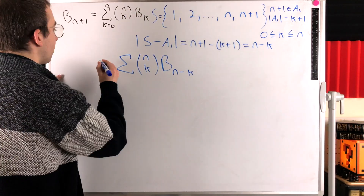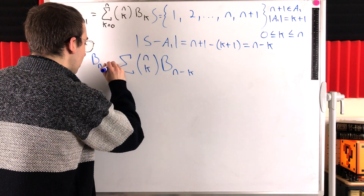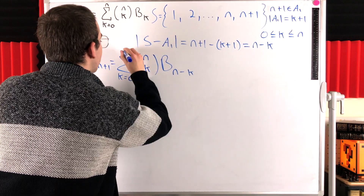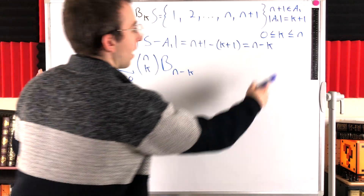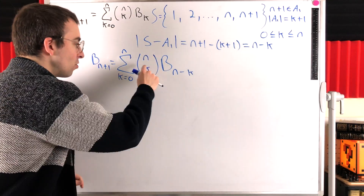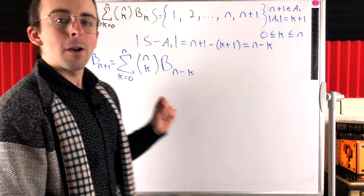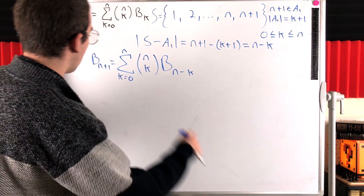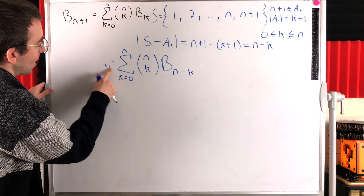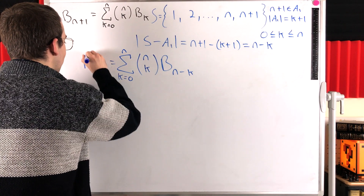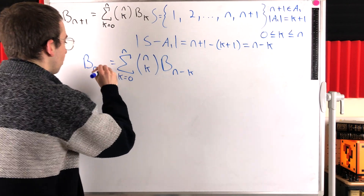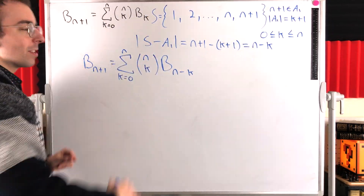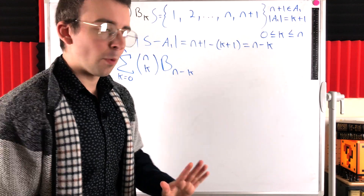So all we have to do to find the bell number BN+1 is take the sum from K equals zero to N of N choose K times the bell number BN minus K. That's how we find the next bell number BN+1. Now, this doesn't look quite like the recurrence relation we stated — it looks pretty close, but let's make it work.